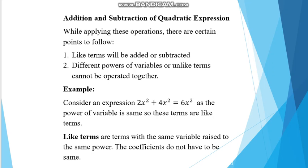For addition and subtraction of quadratic expressions, there are certain rules to follow. Number one: like terms will be added or subtracted. Number two: unlike terms — terms with different powers — cannot be operated together. For example, 2x² + 4x² = 6x², because both terms have the same power. Like terms are terms with the same variable raised to the same power; the coefficients do not have to be the same.